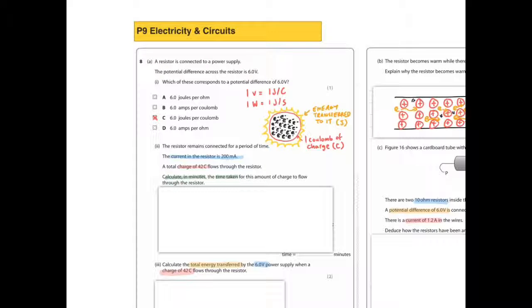A resistor is connected to a power supply. The potential difference across the resistor is 6 volts. Which of these corresponds to a potential difference of 6 volts? 6 joules per ohm, 6 amps per coulomb, 6 joules per coulomb, or 6 amps per ohm.